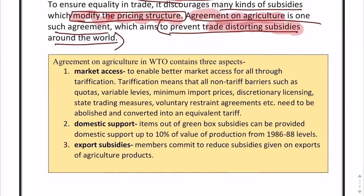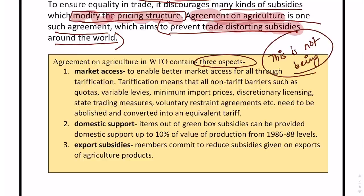The Agreement on Agriculture in WTO contains three aspects. All these three things are for your knowledge and understanding, and even if you miss them in the examination it's not going to matter, because this is not what has been asked in the topic. The topic is something else. These three aspects — market access, domestic support, and export subsidies — are not to be mentioned in the examination because you only have three to four hundred words to write.